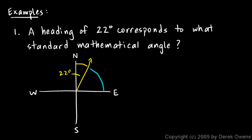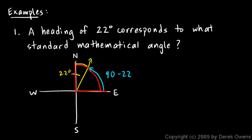The standard mathematical angle starts on the x-axis — which is straight to the right — and rotates counter-clockwise. So this angle here is going to be 90 minus 22. You can see that these two have to add up to 90, because they fit together in the first quadrant as a right angle. So 90 minus 22 is 68 degrees.